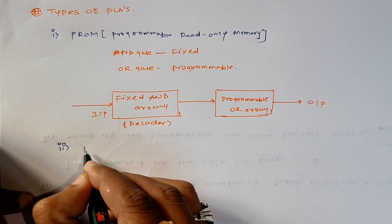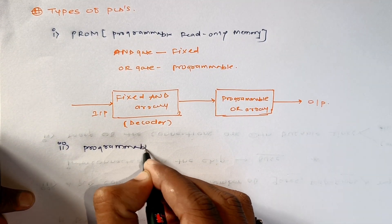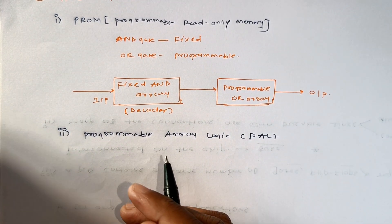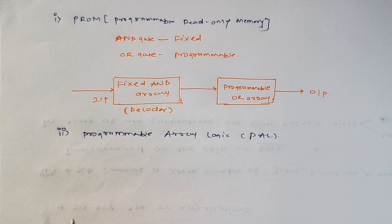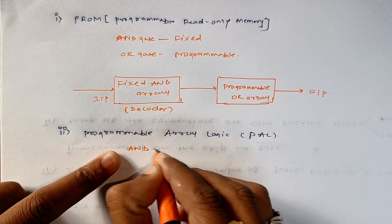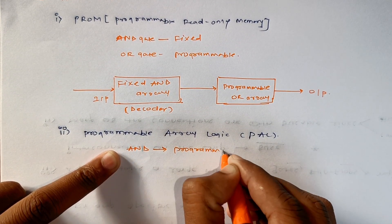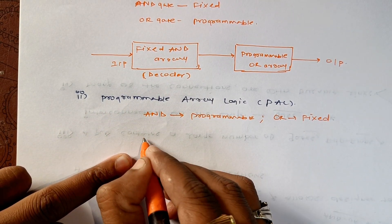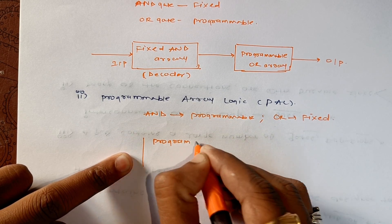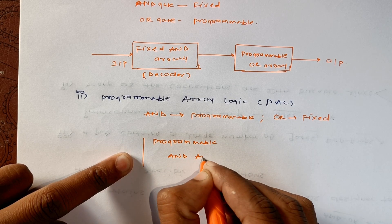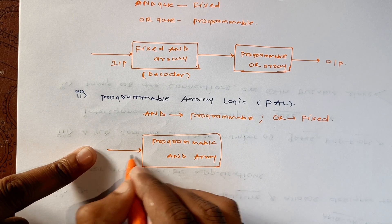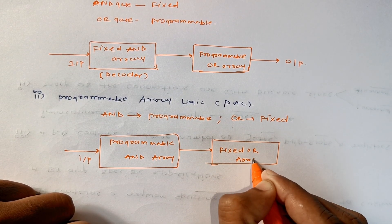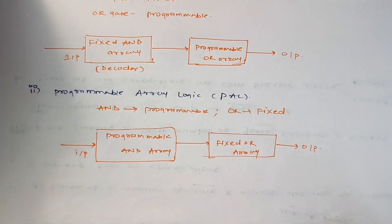Second type is programmable array logic, which we call PAL. What is PAL? It is a PLD in which AND gate is programmable and OR gate is fixed. So we can denote this: we have programmable AND array, this is its input, and we have fixed OR gate, fixed OR array. So this becomes a schematic of programmable array logic.